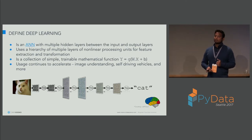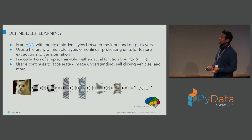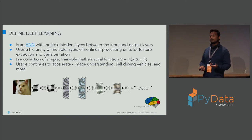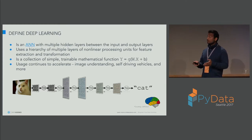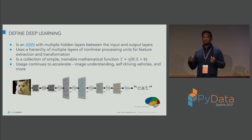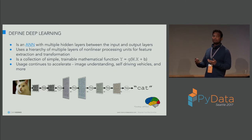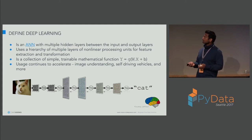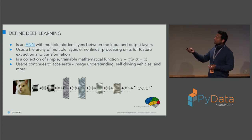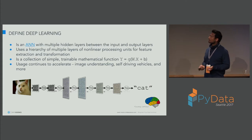Let's quickly define what we mean by deep learning. Deep learning is a subset of artificial neural networks — we say 'deep' because it has more than two layers as part of the neural network being created. We define a hierarchy of multiple layers for nonlinear processing units for feature extraction and transformation. Basically, it's a collection of simple trainable mathematical functions. The nonlinear relationships we're trying to capture are derived from simple linear equations overlapped in multiple different ways to understand what latent interactions exist that we as humans are not able to capture. The adoption is continuously and exponentially accelerated, especially around image understanding and self-driving vehicles.